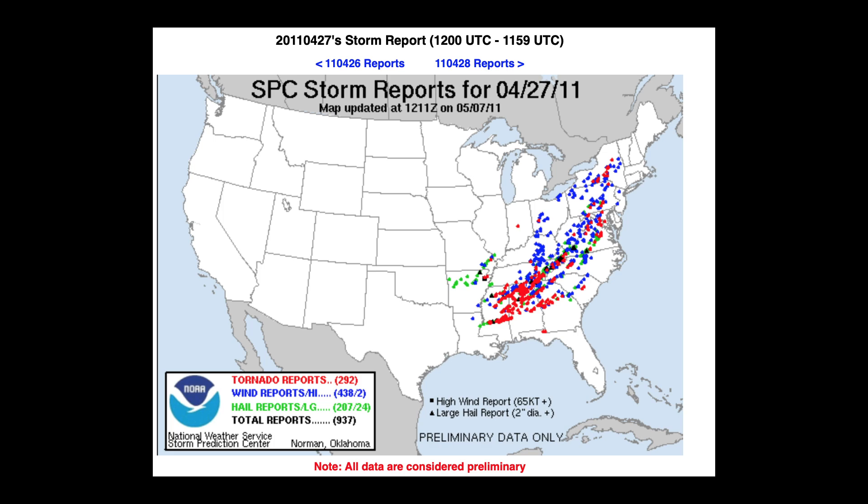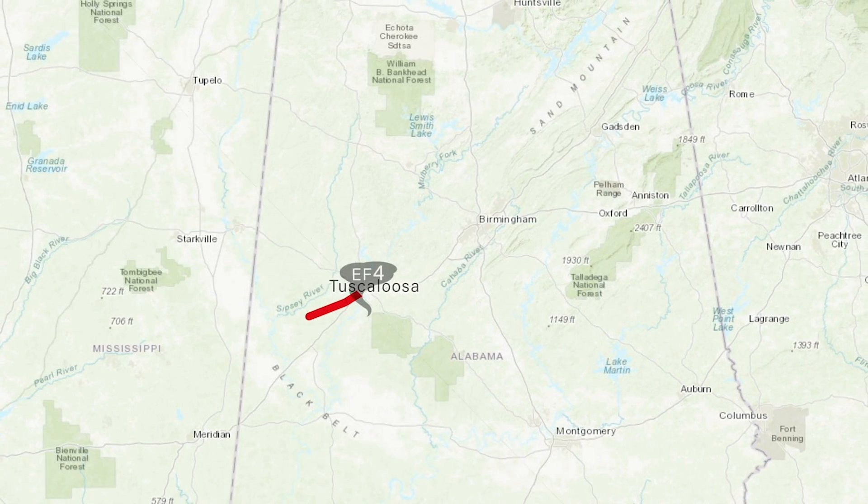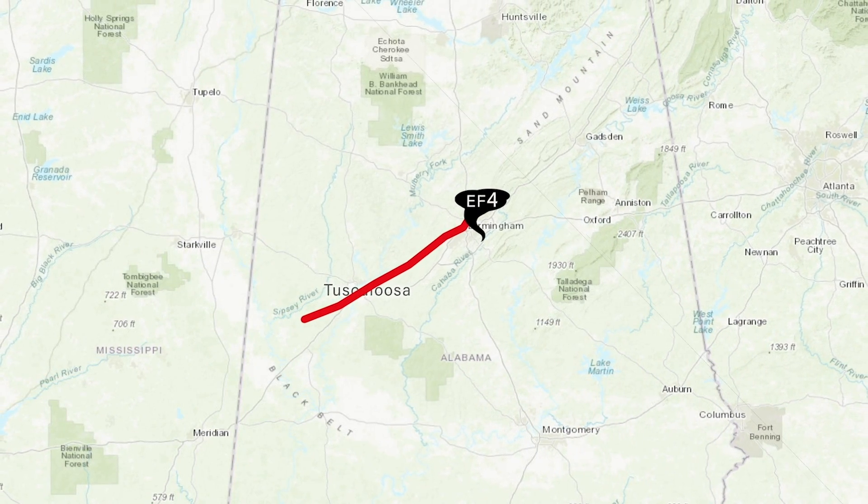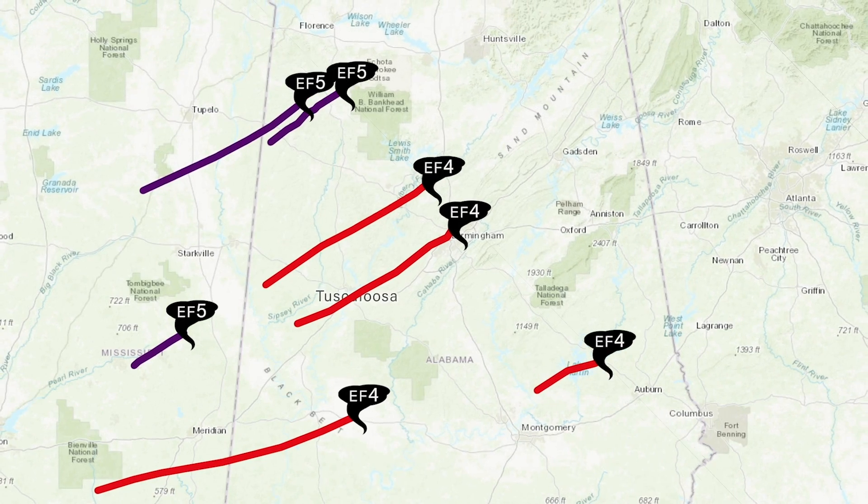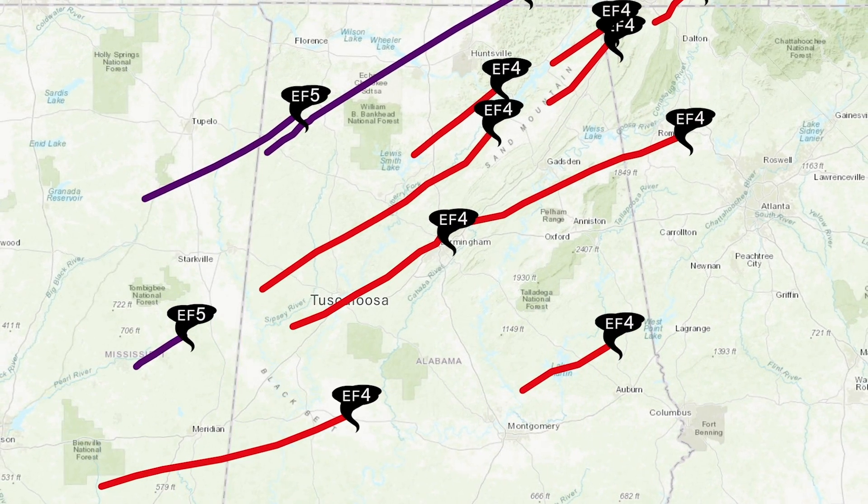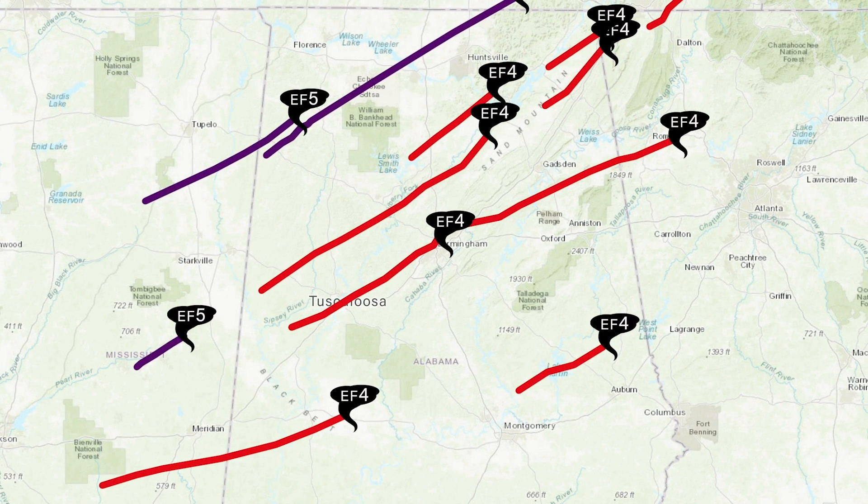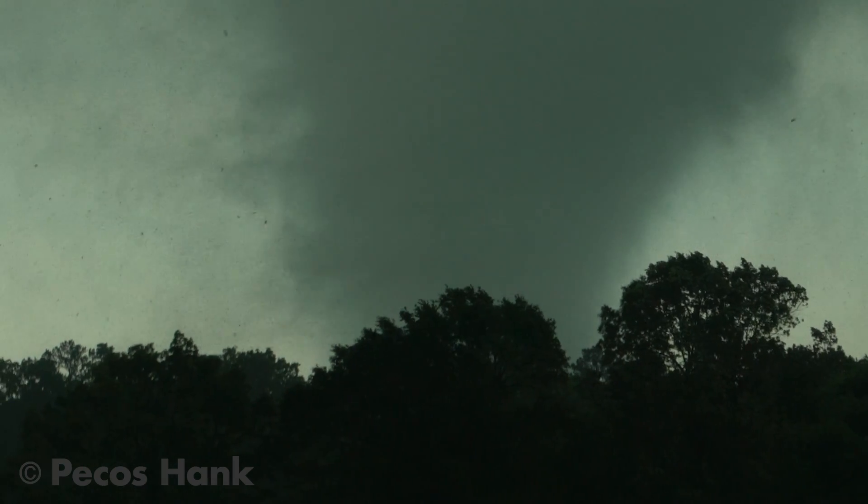April 27th, 2011 was the big outbreak in the southeast. There was an F4 tornado in Tuscaloosa, Alabama. There were multiple F4s and F5 tornadoes in this event. From my perspective, what makes the southeast so challenging is the topography. You as a chaser, of course, would agree, I think.